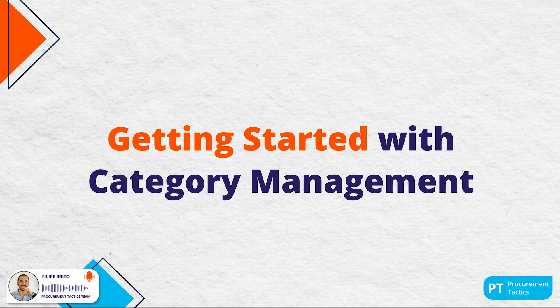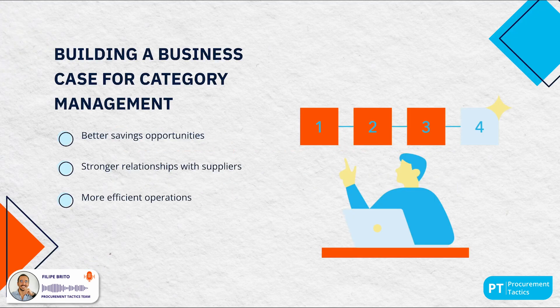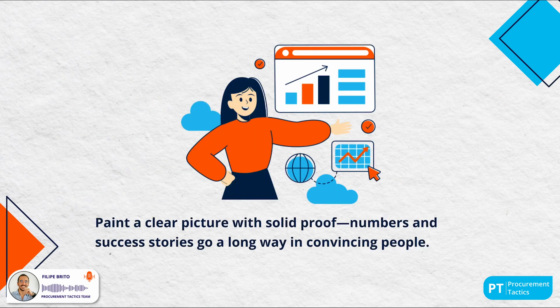Let's walk through the initial steps for organizations new to category management. First, build a compelling business case by demonstrating its benefits: better savings opportunities, stronger supplier relationships and more efficient operations. Category managers should research examples from similar organizations where category management has made a big difference and use data and analytics to show how these benefits can lead to measurable outcomes. Numbers and success stories go a long way in convincing people.